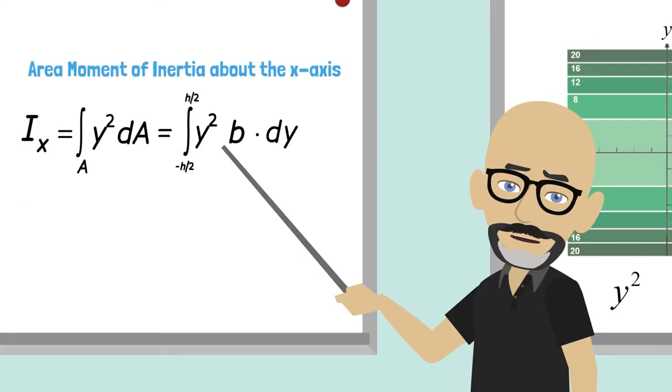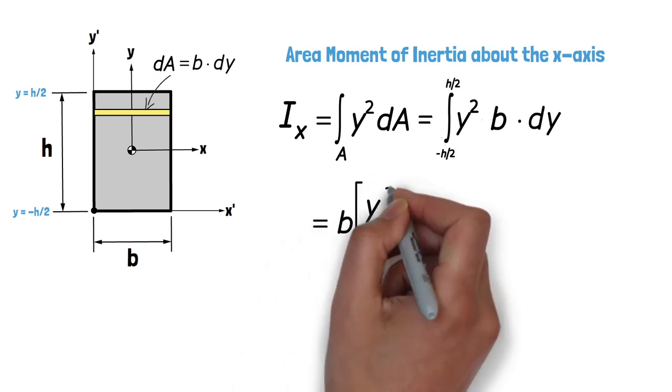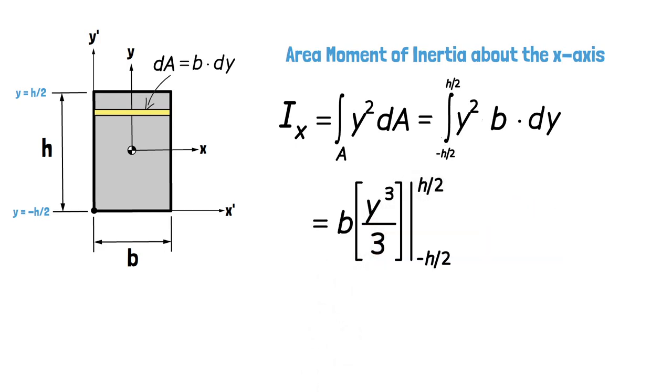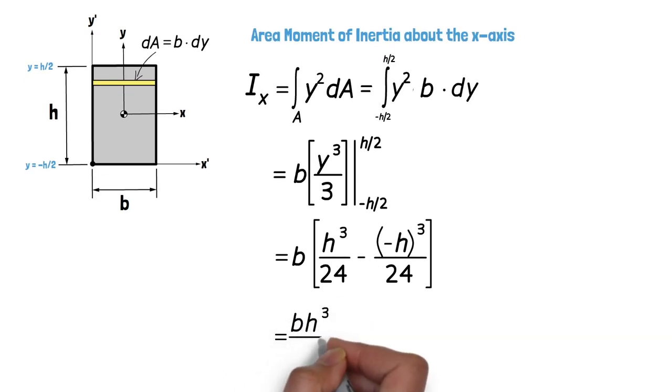Now we are ready to integrate the expression. Integrating b times y squared, we get b times y cubed over 3, which we need to evaluate between the limits of negative h over 2 and h over 2. Substituting in these limits, we get that Ix is equal to b times h cubed over 24 minus negative h cubed over 24. Simplifying this, we obtain the expression b times h cubed over 12. This is our final expression for Ix about the horizontal axis passing through the centroid of a rectangle.